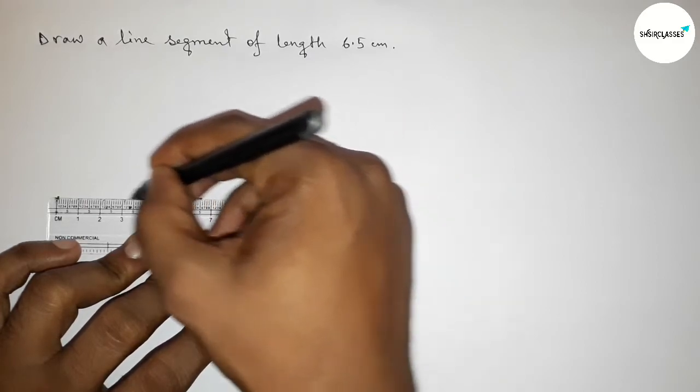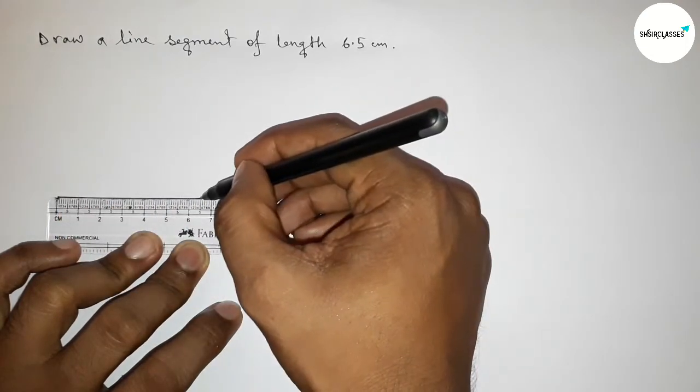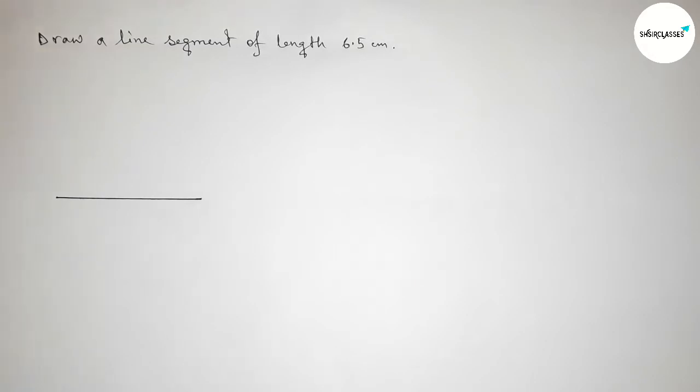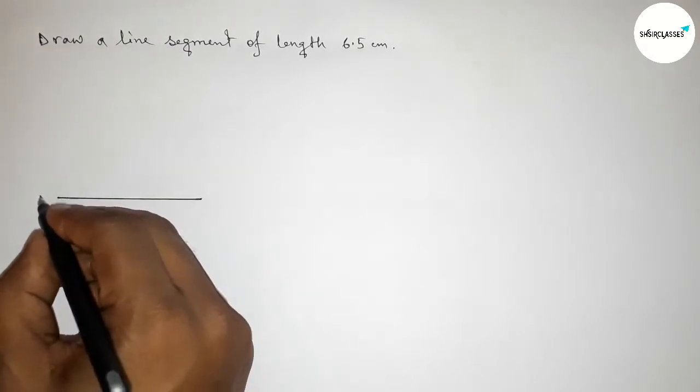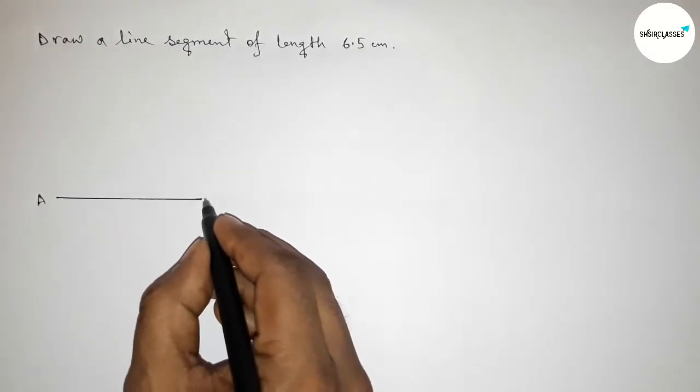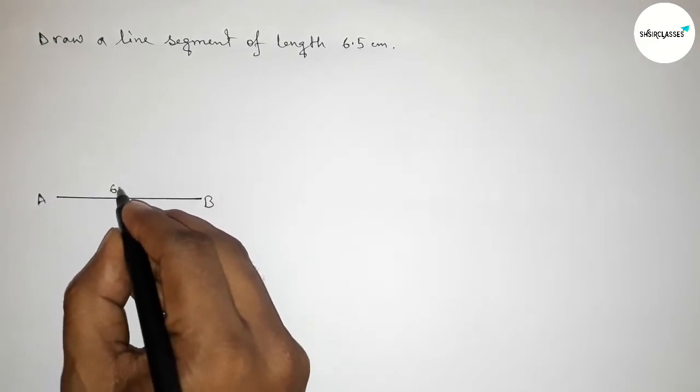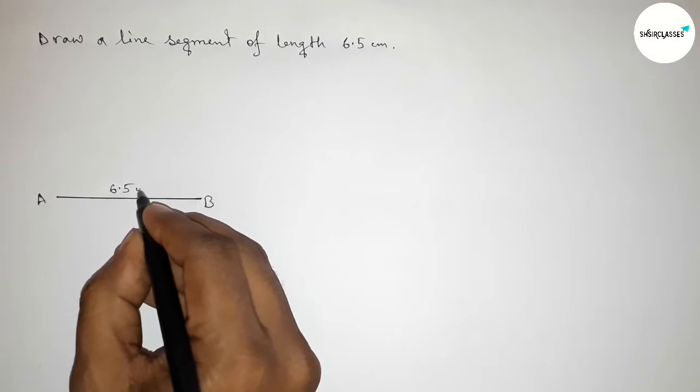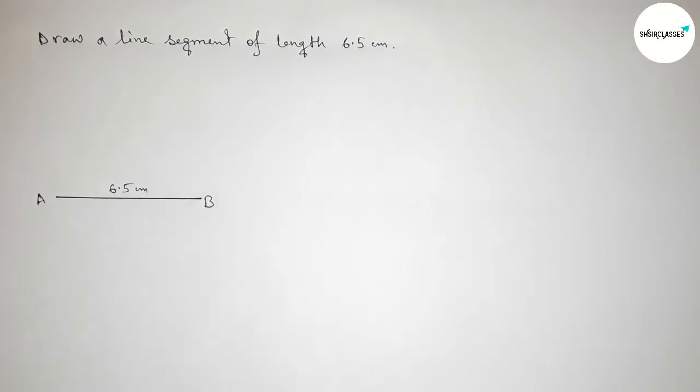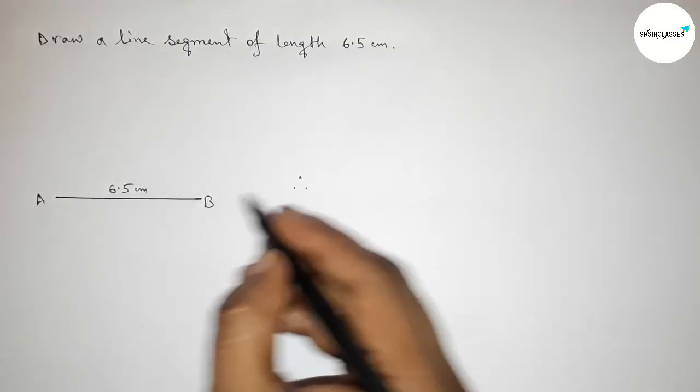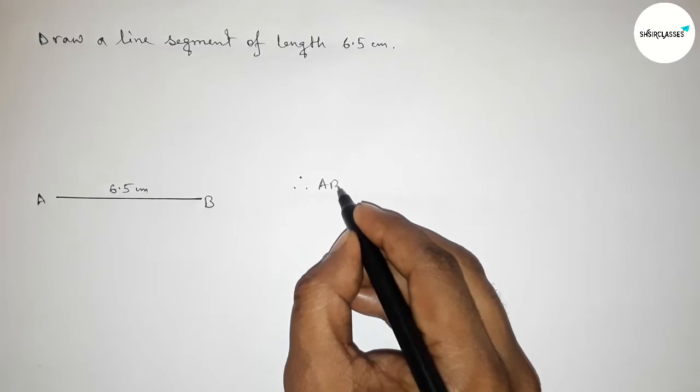And next, joining this line. So taking here now, taking here point A and here B. So AB equals to six point five centimeter length. So therefore here we can say that AB, so AB is a line segment of length six point five centimeter.